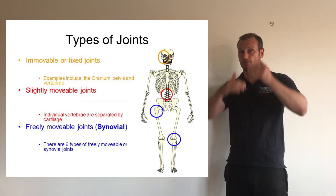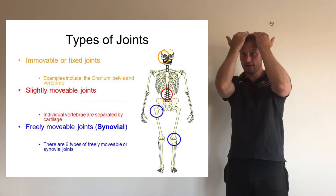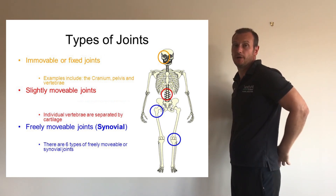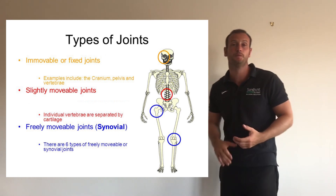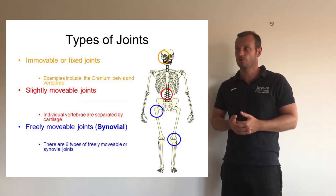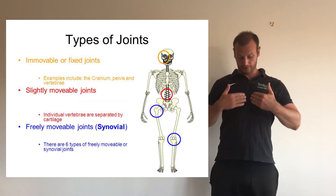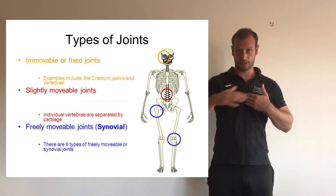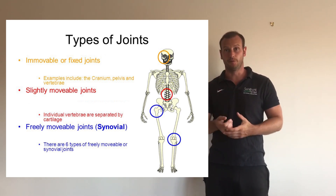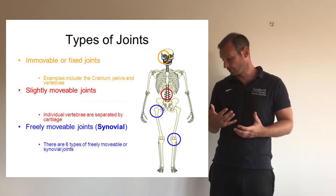A joint can be defined as a place where two or more bones meet — it doesn't necessarily have to involve movement to be defined as a joint. We have three classifications of joint: fixed joints, found between the bones of the cranium and between the bones of the sacrum and coccyx with no movement possible; slightly movable joints, found between the vertebrae and between the sternum and the ribs.